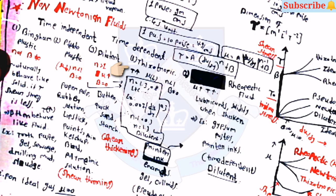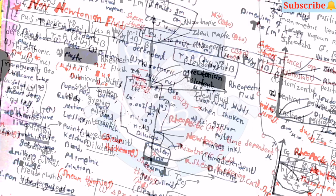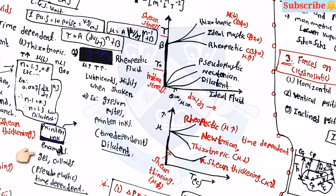For time-dependent fluids there are two types: thixotropic and rheopectic. For thixotropic fluids, viscosity is higher and mu decreases with time; n is less than 1 and beta is not equal to zero. Examples are enamel, gels, and colloids — also known as time-dependent pseudo plastic fluids. For rheopectic fluids, mu is higher and viscosity increases with time. Examples include lubricants and some pastes, printer inks — also known as time-dependent dilatant fluids. Two diagrams are shown: tau versus du/dy and mu versus temperature.